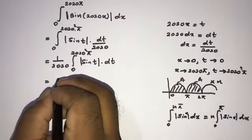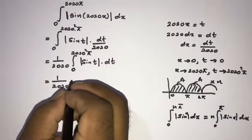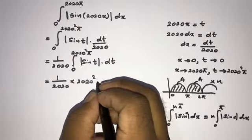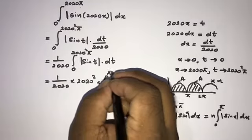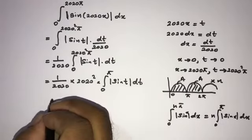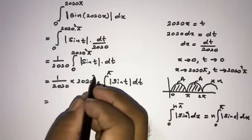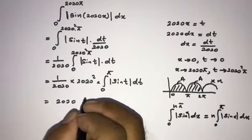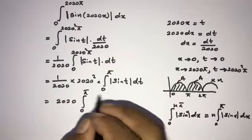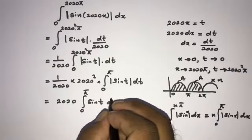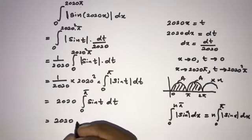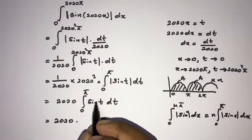According to this property, we can write: (1/2020) times 2020 squared times the integral from 0 to π of the absolute value of sine of t dt. This simplifies to 2020 times the integral from 0 to π of sine of t dt.